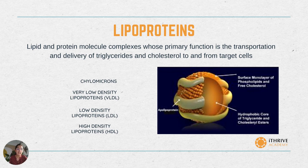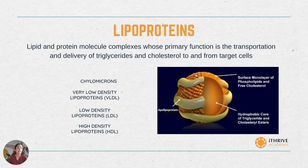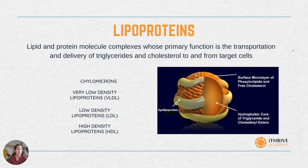These are chylomicrons, very low-density lipoproteins (VLDLs), low-density lipoproteins (LDLs), and high-density lipoproteins (HDLs). Chylomicrons are large triglyceride-rich particles made by the intestine, which are involved in the transport of mainly dietary triglycerides and some amount of cholesterol. The removal of triglyceride from chylomicrons by tissues results in smaller particles called chylomicron remnants, which are enriched in cholesterol and can induce blockages in the blood vessels.